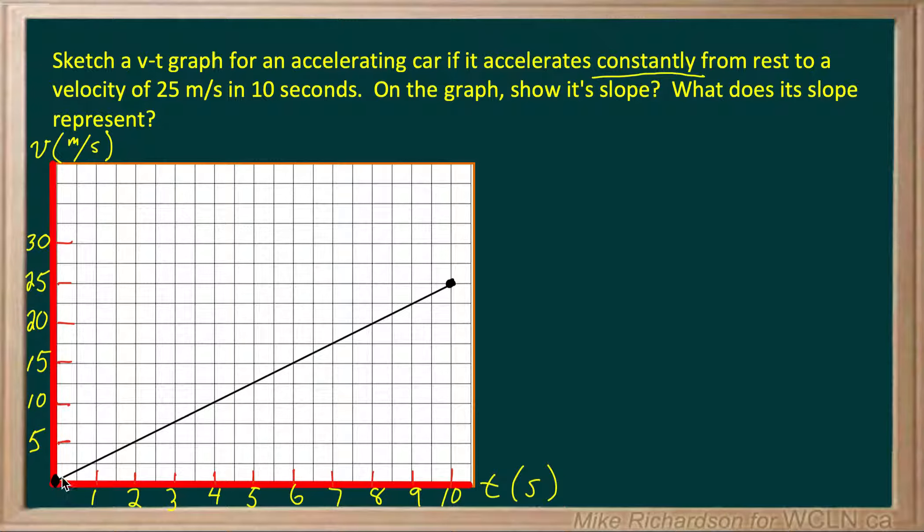At time zero he starts from rest so I'm at the origin where the y-axis is velocity and the x-axis is time. Ten seconds later I'm at 25 meters per second. So I connect the dots and I get a straight line.